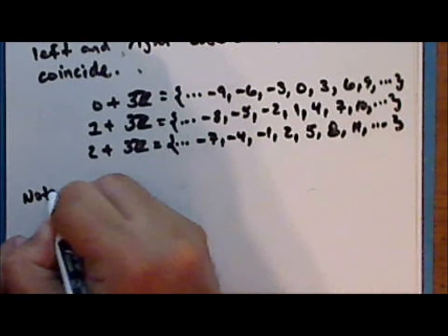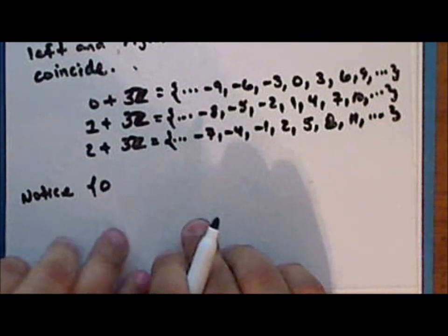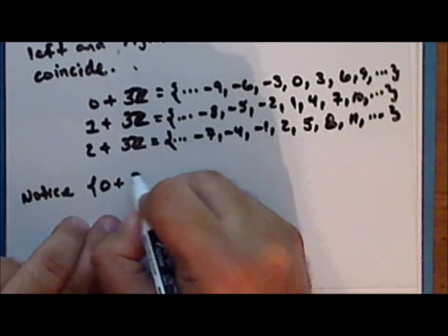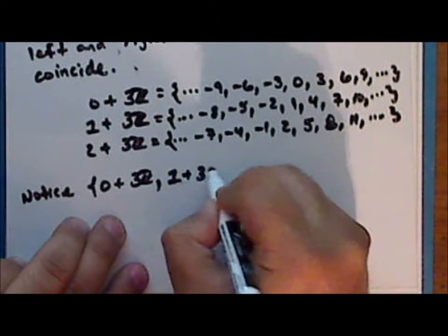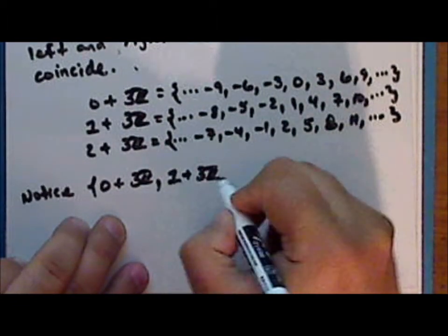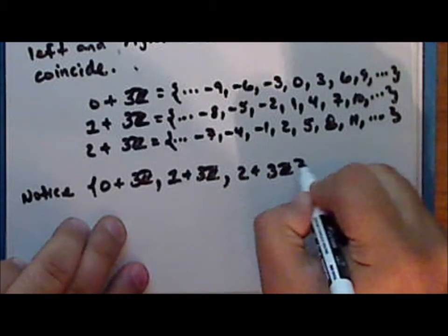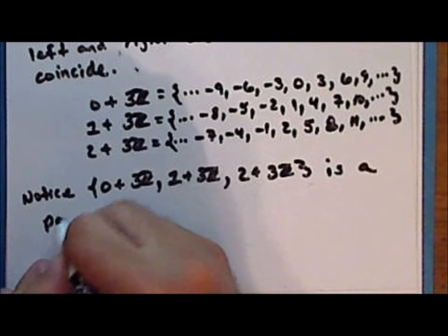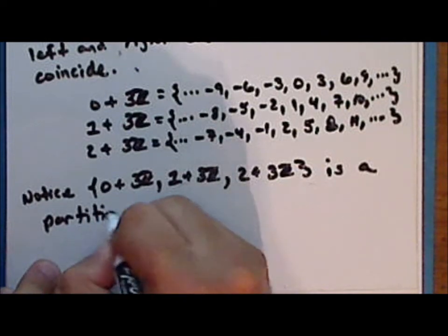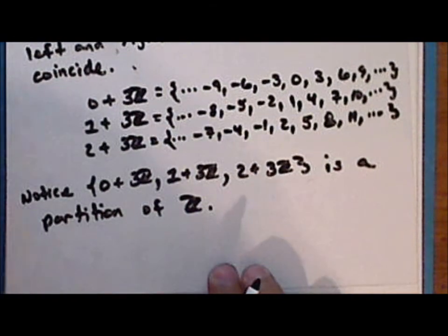The set containing the left coset of 0, the left coset of 1, and the left coset of 2 forms a partition of the entire set of integers.